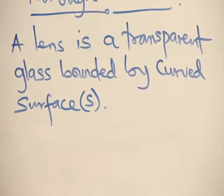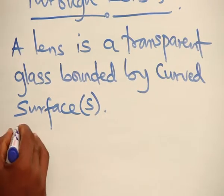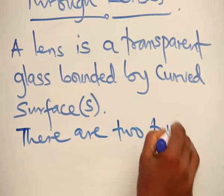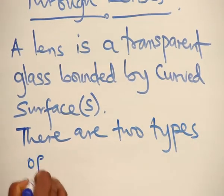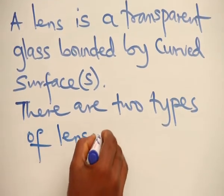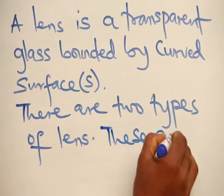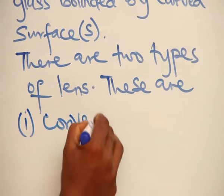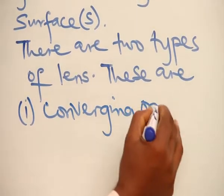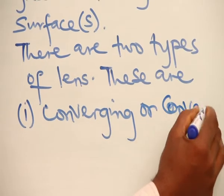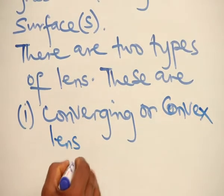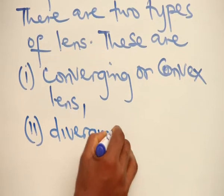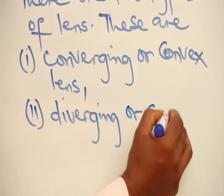There are two types of lens. These are the converging or convex lens, and the diverging or concave lens.